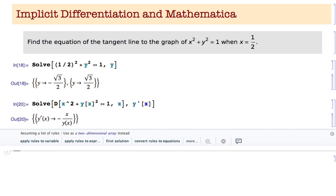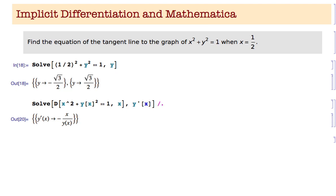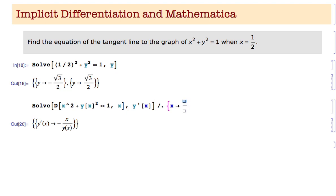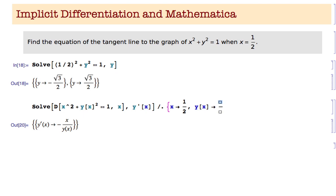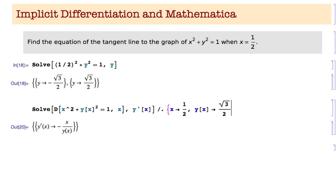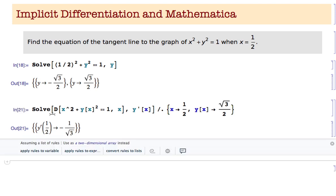In standard notation that's just minus x over y. Now to find the value of y prime when x is one half and y is sqrt(3)/2, I use the ReplaceAll command — that's the forward slash period. I write: replace all with braces, x goes to one half, comma, y[x] goes to sqrt(3)/2, close brace. Hit Shift+Return and it tells me y prime at one half equals minus one over square root of three.